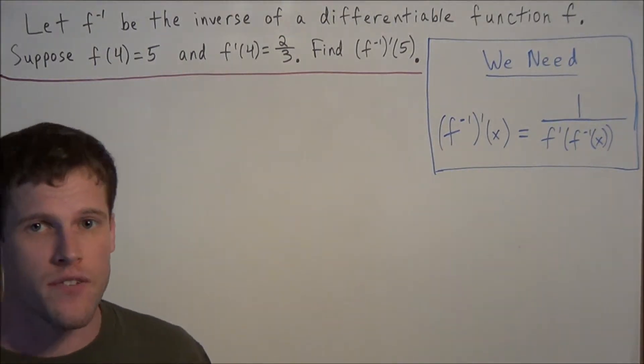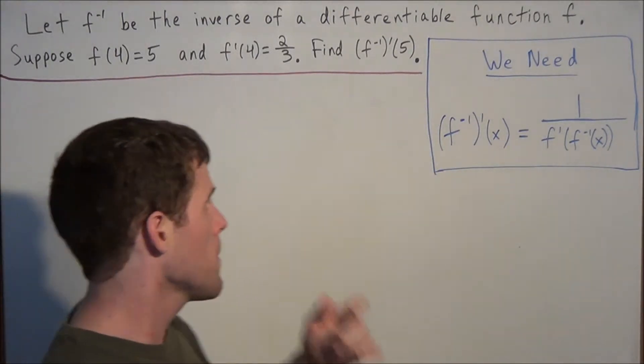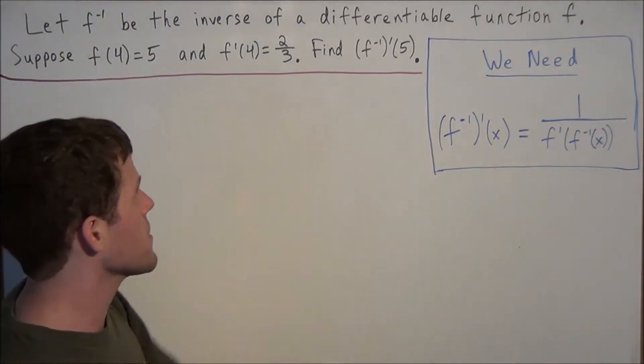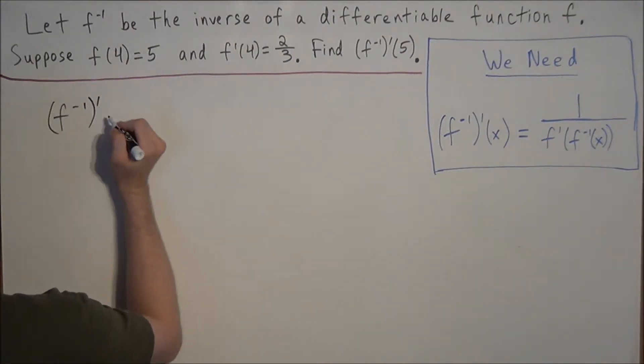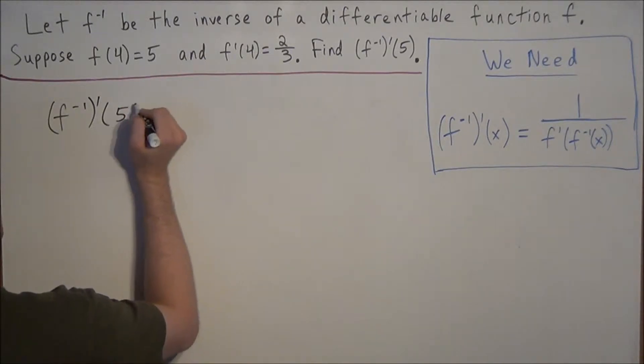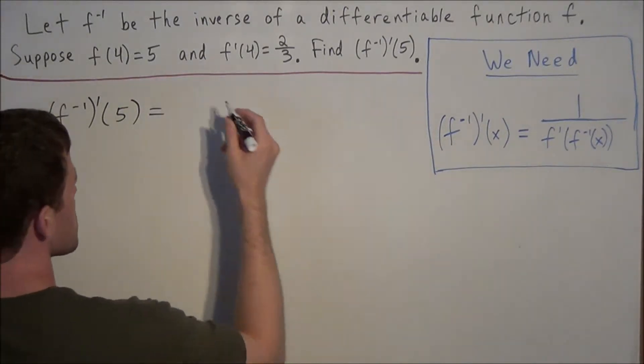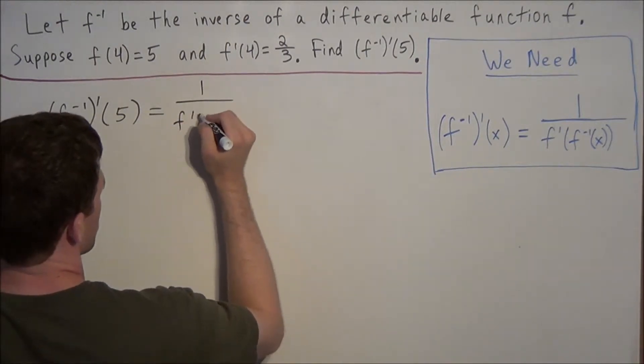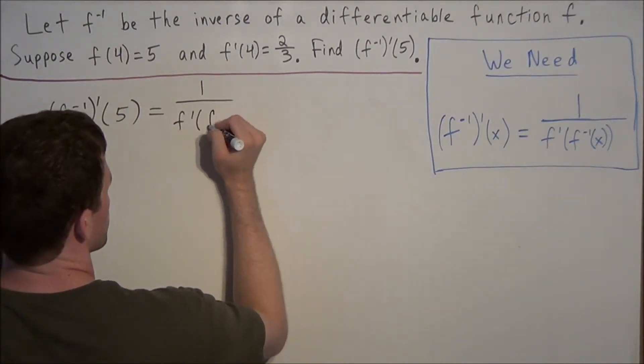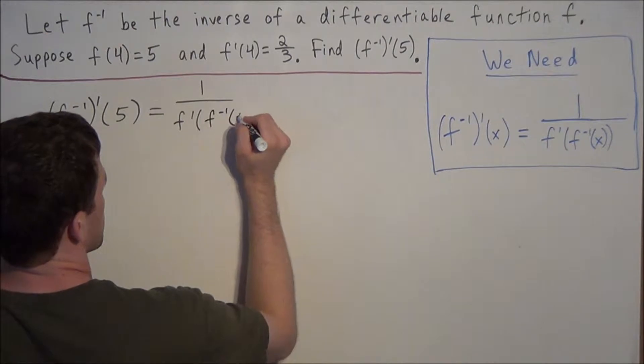Now that equation is difficult to say, and it's a lot to handle when you're first using it, but we just need to break it down piece by piece. We're looking for the derivative of f inverse at 5. This is what we want to find. If we use this equation, this is equal to 1 over f prime at f inverse of 5.